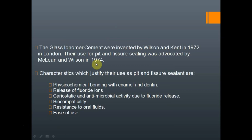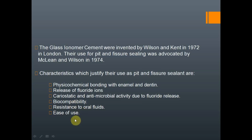Glass ionomer cement is commonly used, and even composites can be used. Glass ionomer cement was introduced by Wilson and Kent in 1972. Its better properties include chemical bonding with enamel and dentine — unlike amalgam, which relies only on mechanical bonding. This chemical bonding occurs through a reaction with hydroxyapatite crystals, giving better retention. It also releases fluoride, has cariostatic and antimicrobial activity, is biocompatible, resistant to oral fluids, and easy to use.